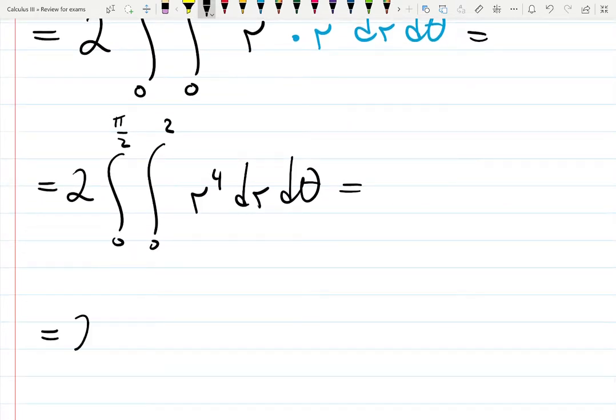That gives me 2 integral from 0 to pi over 2, r to the 5 over 5 from 0 to 2 d theta.